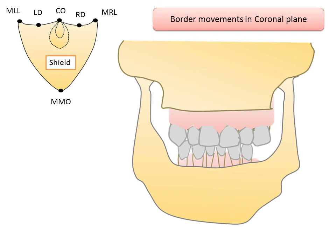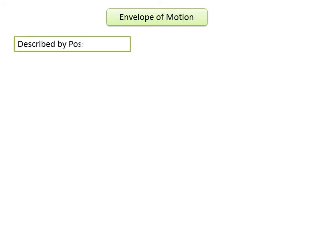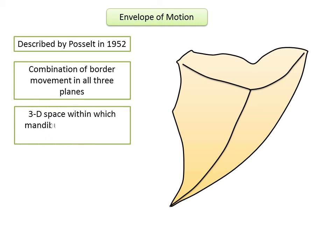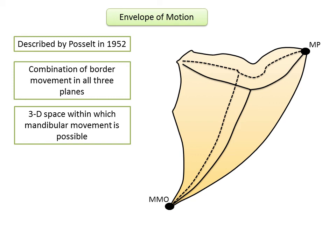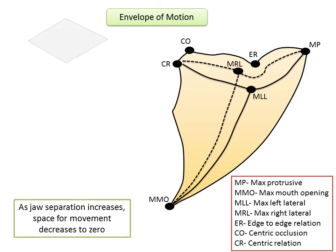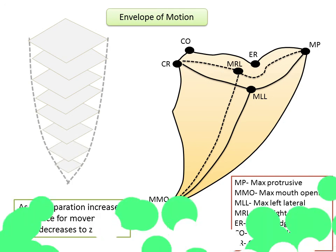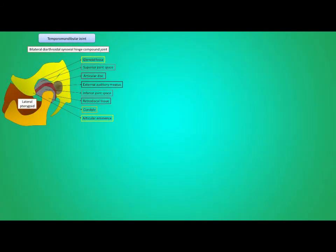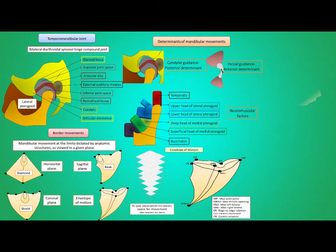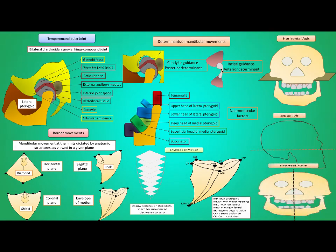Now, combining the border movements of all three planes gives us a three-dimensional space within which mandibular movement is possible. The envelope of motion was first described by Posselt in 1952. This three-dimensional limiting space is called the envelope of motion. It is longest and widest superiorly and narrows to a point near the maximum mouth opening position — as jaw separation increases, the space for movement decreases to zero at maximum mouth opening. The small dotted oval-shaped circles seen in all these tracings represent functional movements, which will be discussed in subsequent presentations.